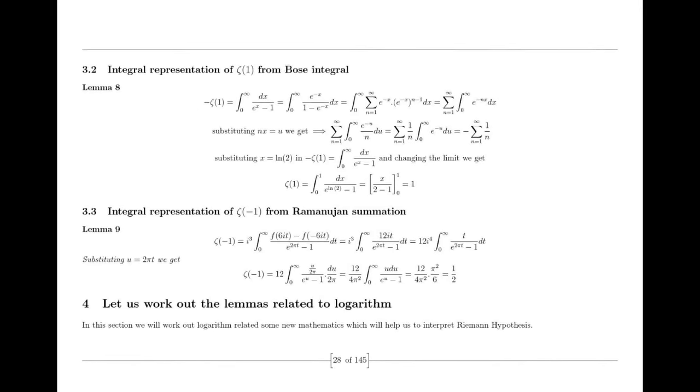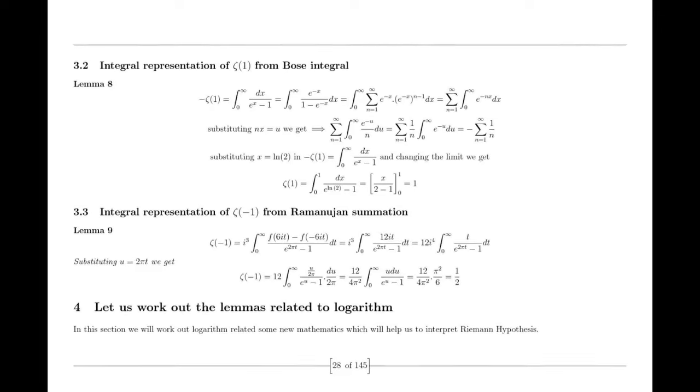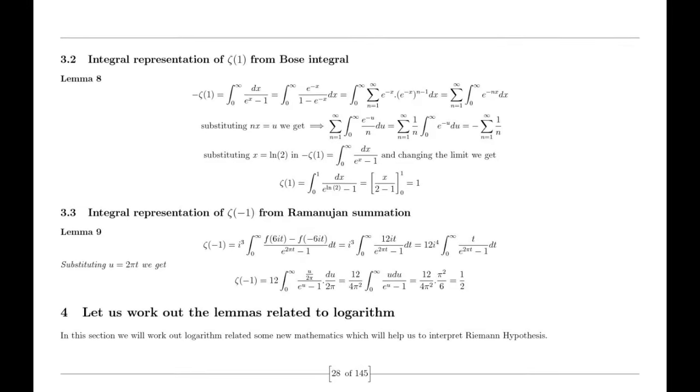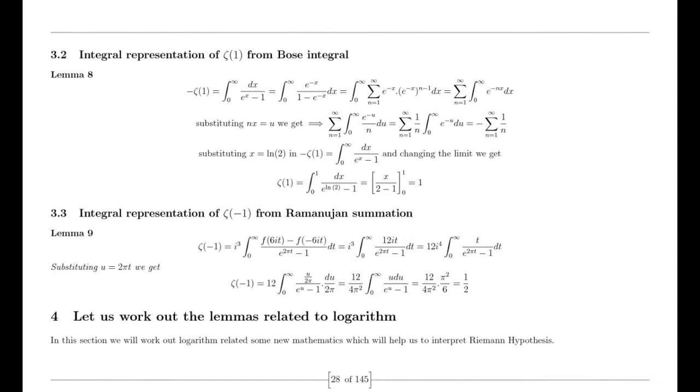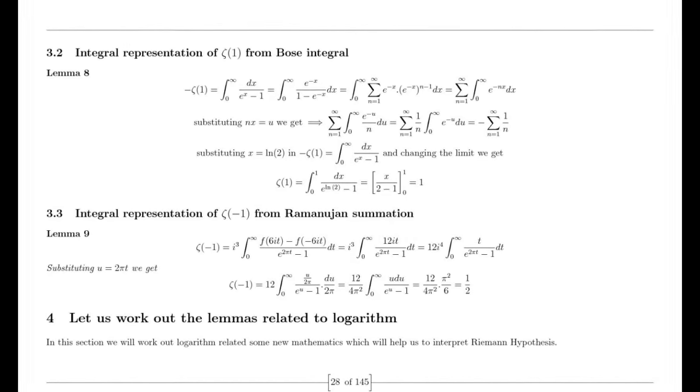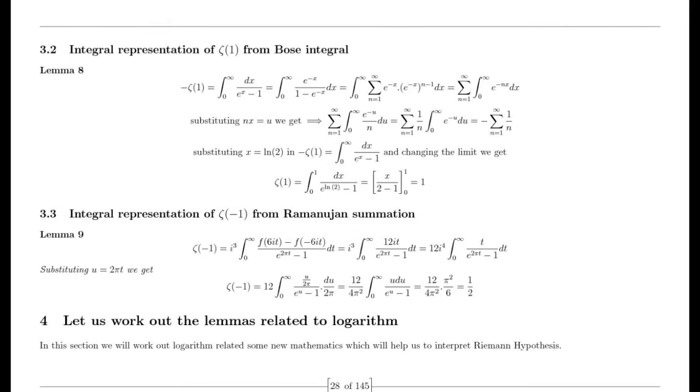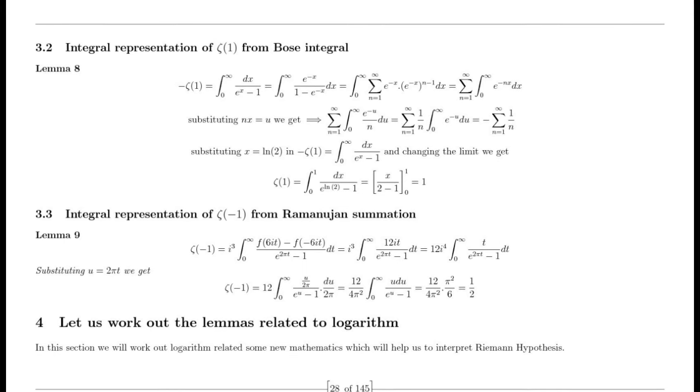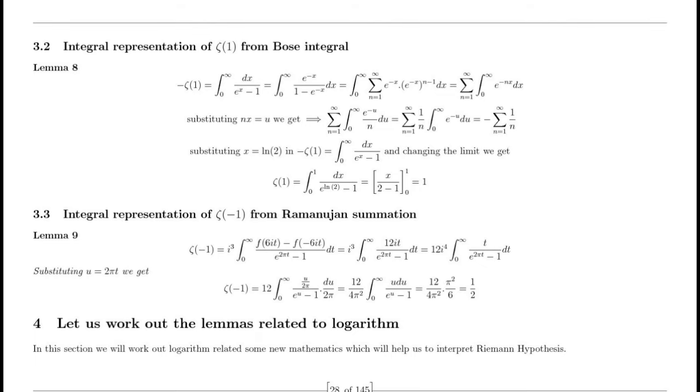The intriguing numerical relationship between the fine structure constant and half of the Charles's ratio of an ideal gas has kept me awake at night. Connecting the dots to complete the picture requires a certain level of imagination. The fine structure constant, denoted by α, is a fundamental constant in physics that characterizes the strength of the electromagnetic interaction between charged particles. Its value is close to 1/137.